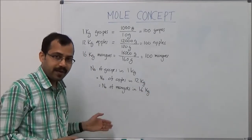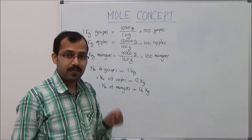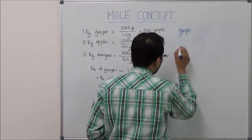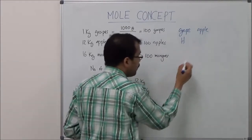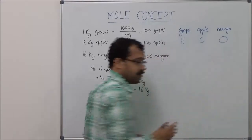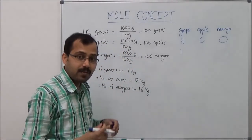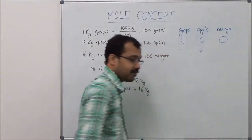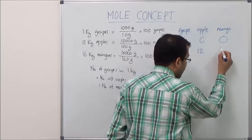From this garden of grapes, apples, and mangoes, let's go to a new garden — a garden of the periodic table of elements. In this new garden, in place of the grape we have the hydrogen atom, in place of the apple we have the carbon atom, and in place of the mango we have the oxygen atom. If the mass of the hydrogen atom is 1 unit, the carbon atom is 12 times heavier, so the mass of carbon is 12 units. The oxygen atom is 16 times heavier than hydrogen, so the mass of oxygen is 16 units.